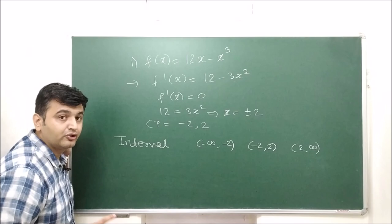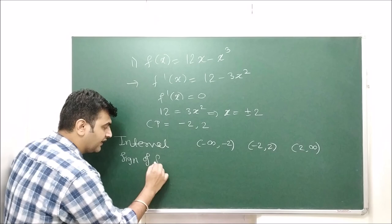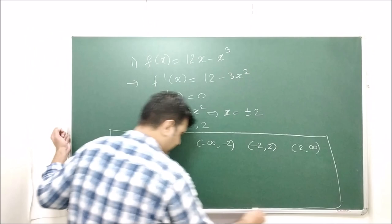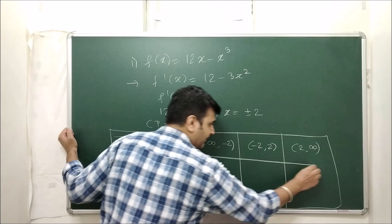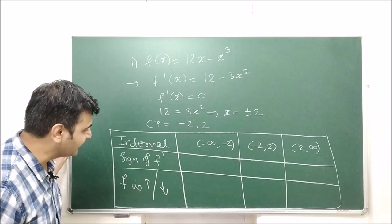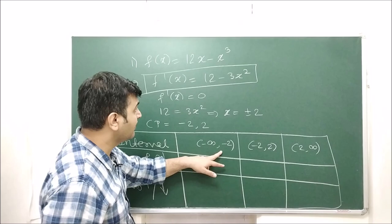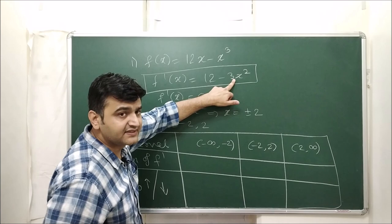In the table, the first row is the intervals — split your domain at the critical points, giving three intervals. The second row is the sign of f′, and from that you determine whether the function is increasing or decreasing. For the interval minus infinity to minus 2, take a test point like minus 3: f′(−3) = 12 − 3(9) = 12 − 27, which is negative. So the function is decreasing there.